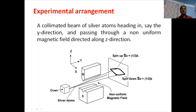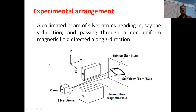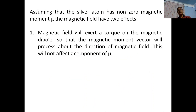This is the experimental arrangement. A collimated beam of silver atoms heading in the y-direction passes through a non-uniform magnetic field directed along the z-axis. There is a screen on which the deflected silver atoms strike. We must note that the magnetic field points along the z-axis while the silver atoms move along the y-axis. Assuming that the silver atom has a non-zero magnetic moment μ, the magnetic field will have two effects: first, it exerts a torque on the magnetic dipole so that the magnetic moment vector precesses about the direction of the magnetic field, and this does not affect the z-component of μ.